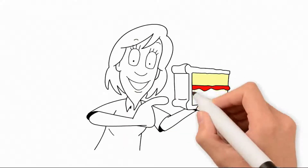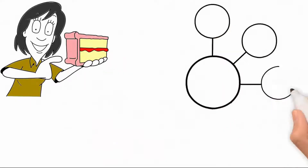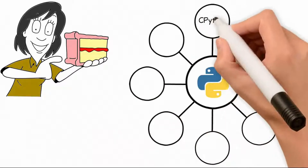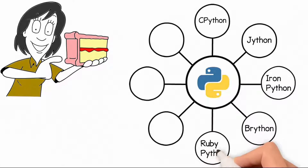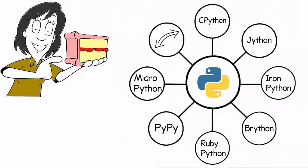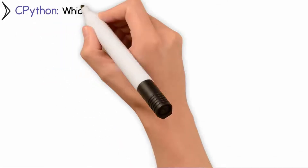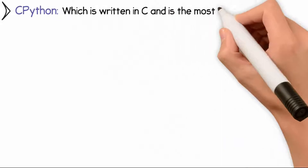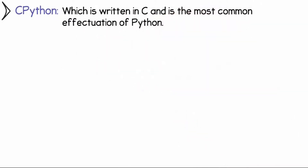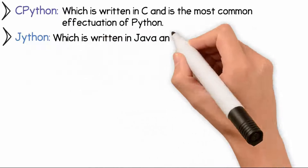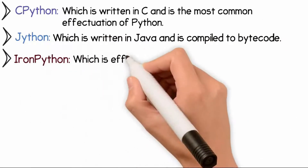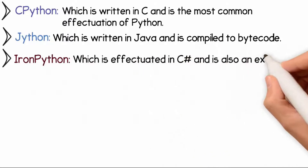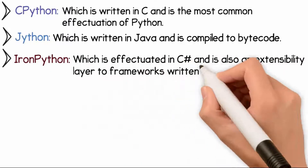Just like ice cream and chocolate cake, Python began with only one flavor. But today, the programming language has gained a few more flavors. Some of these new types are a combination with other programming languages. The various types include CPython, which is written in C and is the most common implementation of Python; Jython, which is written in Java and compiled to bytecode; and IronPython, which is implemented in C# and is also an extensibility layer to frameworks written in .NET.